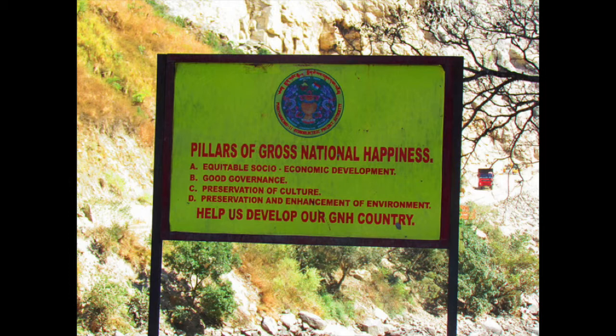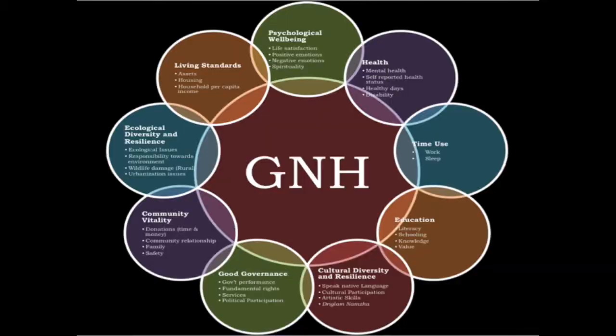Gross national happiness embodies this definition through four pillars which include sustainable and equitable economic development, environmental conservation, preservation and promotion of culture and heritage, and good governance.